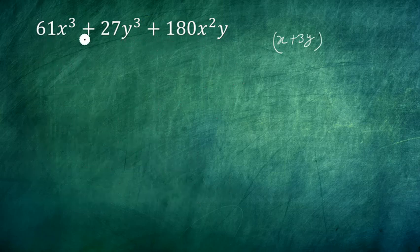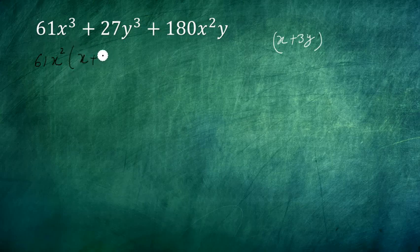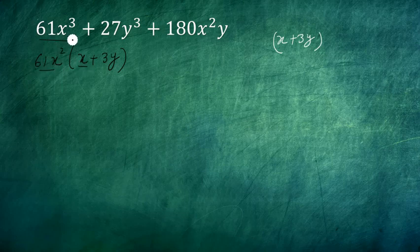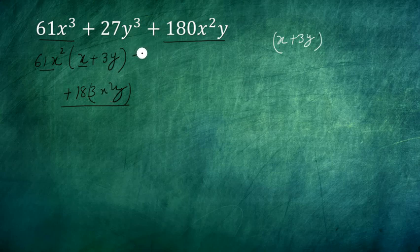Now what do we do? We will write this expression so that x + 3y is a common factor. Already here 180x²y is present. Additionally, we need to make this quantity have x + 3y as a common factor. We will subtract this.